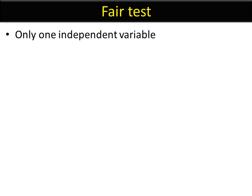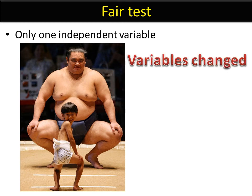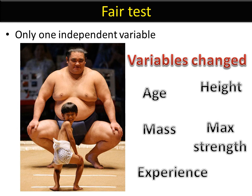A fair test only has one independent variable. For example, take a look at these two fellas — pretty sure this isn't really a fair contest of sumo wrestling. We've changed too many variables: they're obviously different ages, different heights, definitely different masses, and the guy at the back is probably a little stronger and more experienced. That's what makes it a fair test — only one independent variable. So ideally we'd have two twins and just change one thing.